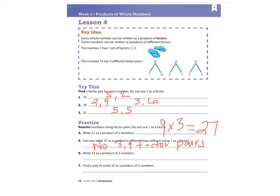Number six: write 32 as a product of two numbers. Think, what times what equals 32? I know that four times eight equals 32. Then number seven says find a way to write 32 as a product of three numbers. I know that two times two is four, so two times two times eight equals 32. You can check this in a calculator.